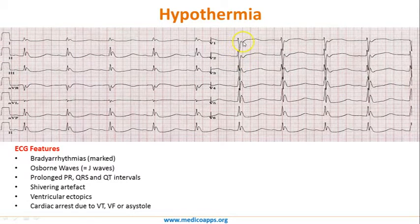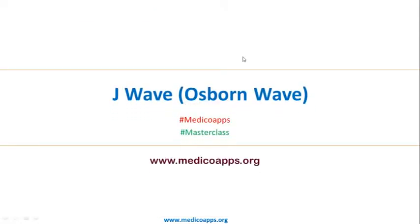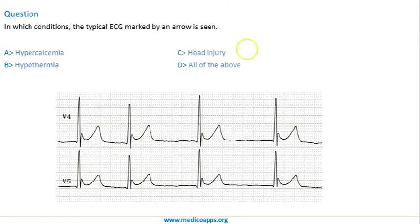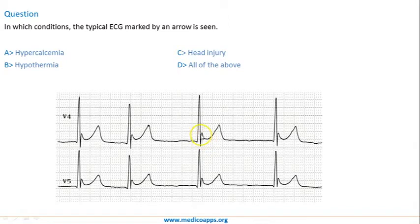In leads V1 or V2, the deflection of the J wave would be towards the negative side because the R wave is predominantly negative in those leads. Looking further at the Osborne waves in a V4 lead where the R wave is predominantly positive, you see a slight positive deviation just after the QRS complex — this is a very typical Osborne wave or J wave.